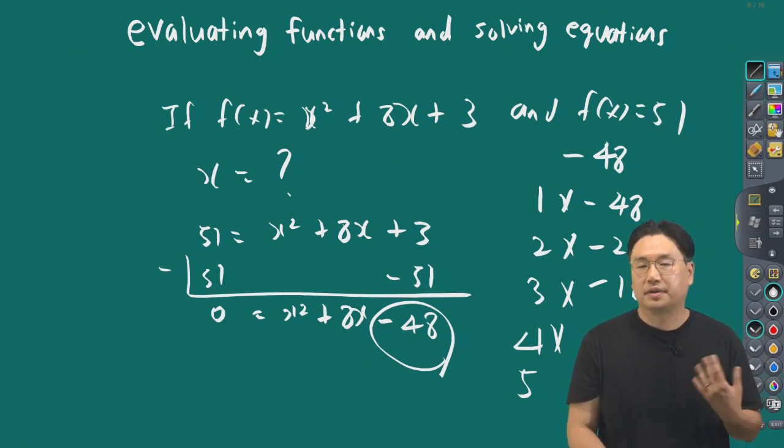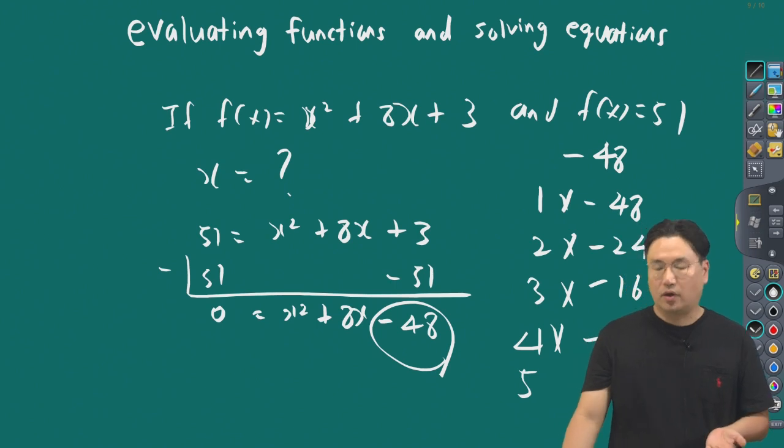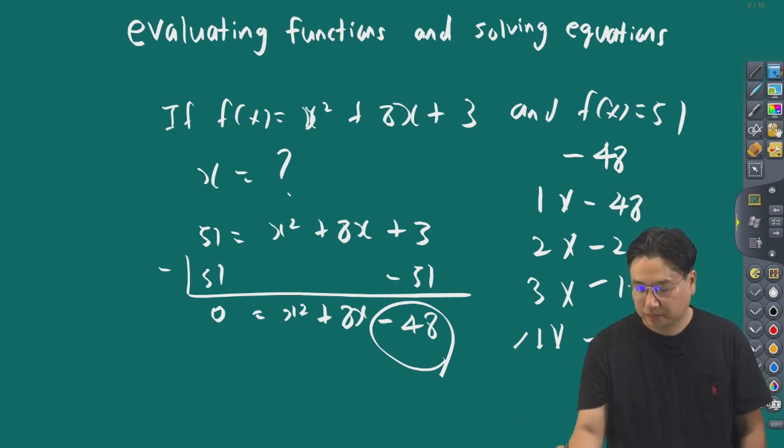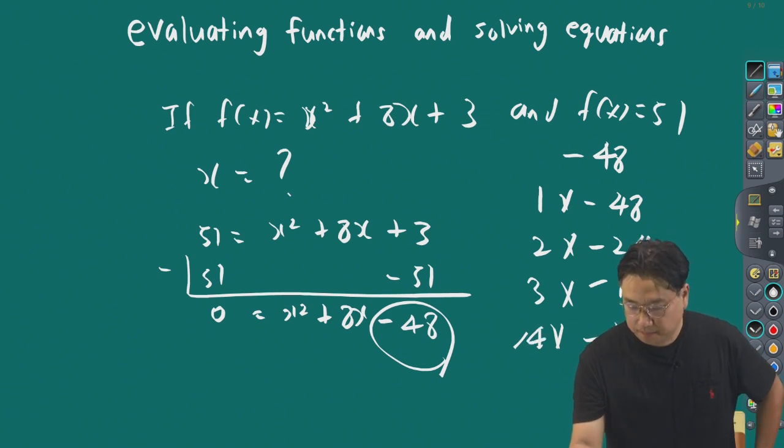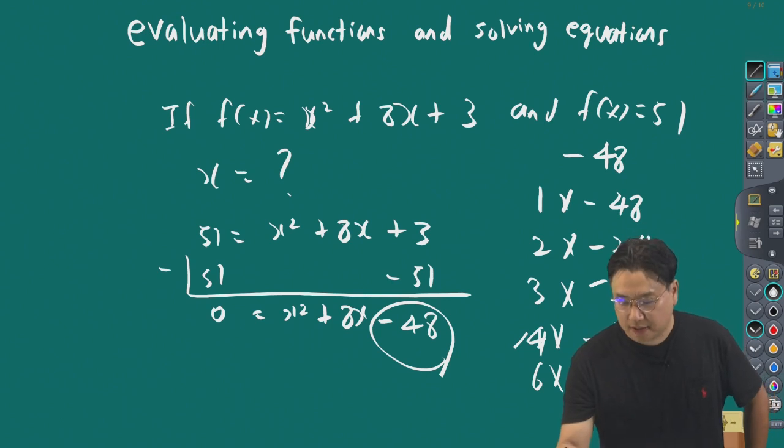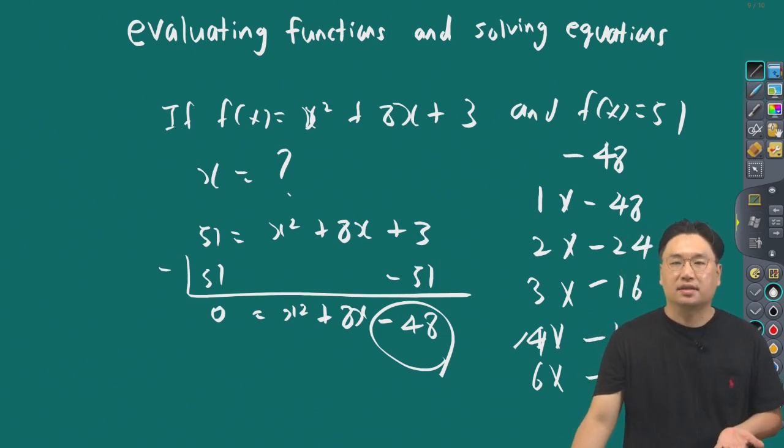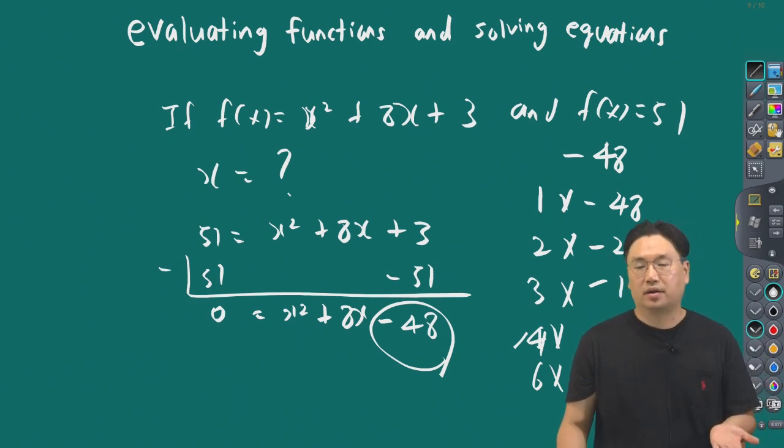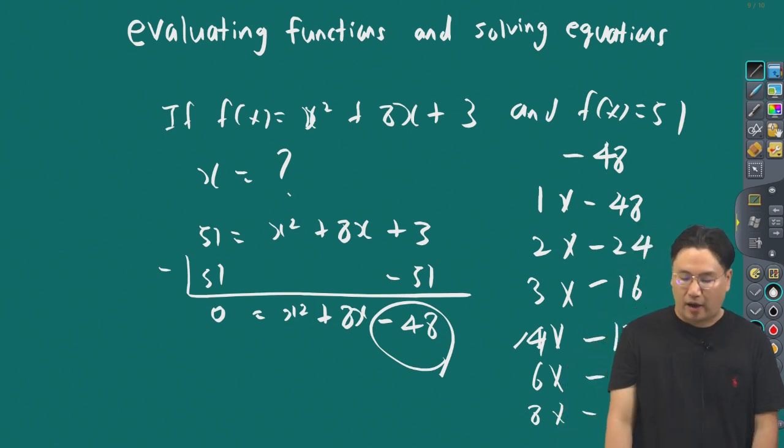5 times 6 is 30, which doesn't work either, so we'll skip that. Finally, 8 times minus 6 is minus 48.